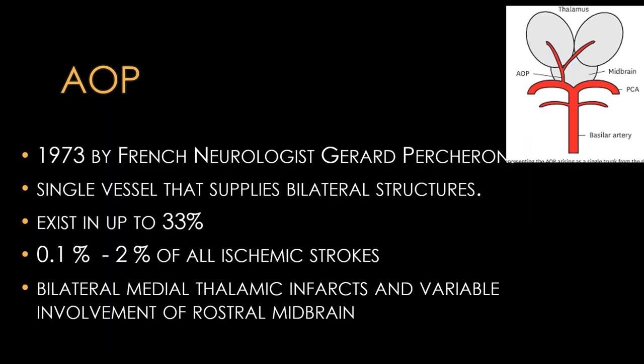The Artery of Percheron, as described by the French neurologist Gerard Percheron in 1973, is a single vessel that supplies bilateral structures — the thalamus as well as the midbrain. It is present in up to 33% of the population, but of all ischemic strokes, around 0.12% are due to Artery of Percheron infarcts.